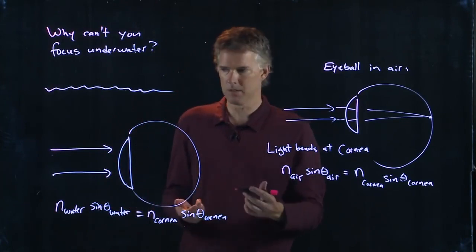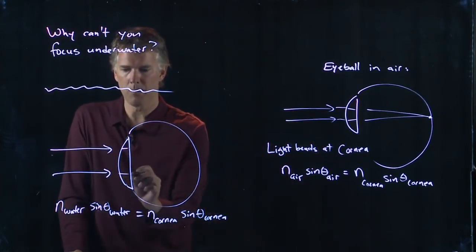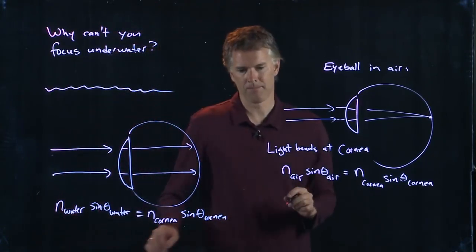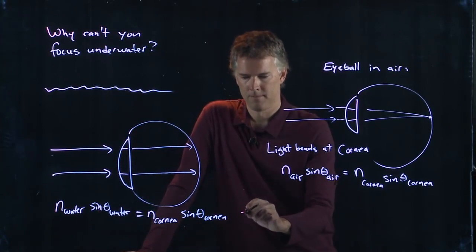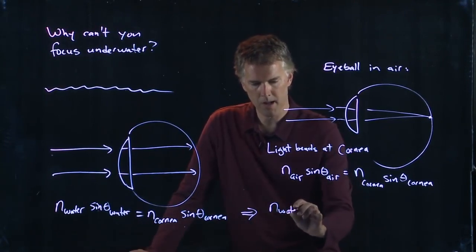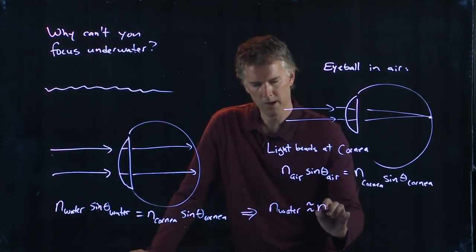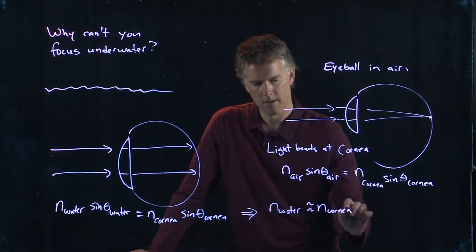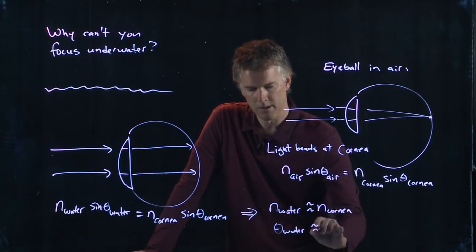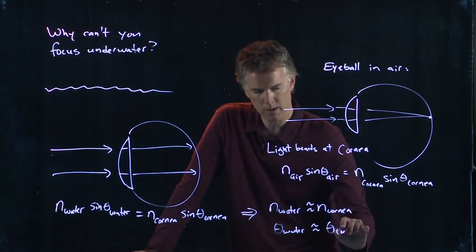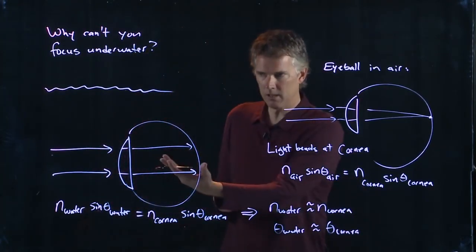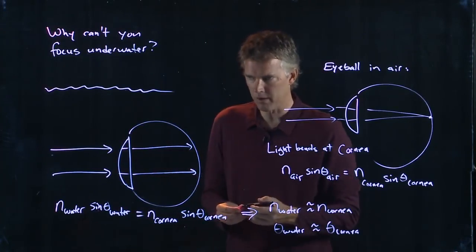And it's not going to bend if they are the same. And what happens is those are nearly the same. N water is nearly the same as n of the cornea. And therefore theta in the water is nearly the same as theta in the cornea. And things don't focus. And so you can't see underwater. You can't focus very well underwater.